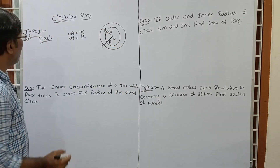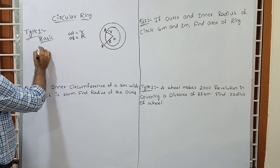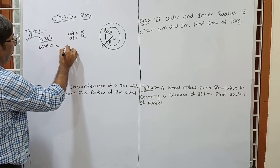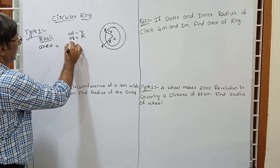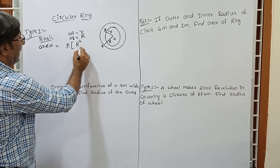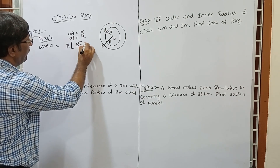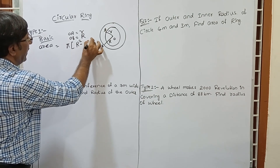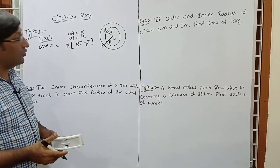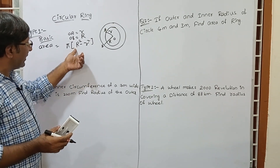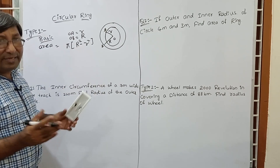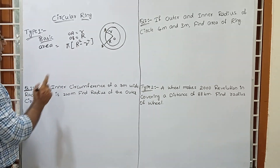The formula for area of ring is pi into capital R square minus small r square. Capital R is the outer radius and small r is the inner radius.